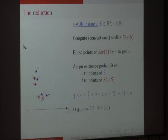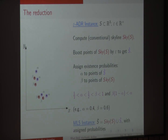We need to assign probabilities to make this stochastic. Purple points get a probability of alpha, and the red points get a probability of beta. For technical reasons, alpha and beta must satisfy certain inequalities — for example, alpha equals 0.4 and beta equals 0.6. Our instance for the MLS problem is basically the union of the set of red and purple points, S-bar, with these assigned probabilities.